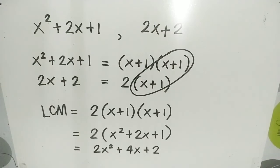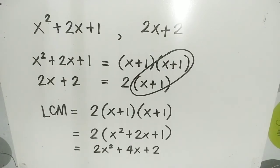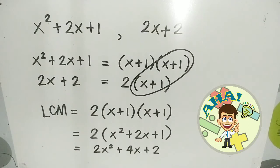So that's how you find the LCM of polynomials. It is very easy — you just need to factor the given polynomials, encircle the common factors, then multiply the common factors and the non-common factors. You can express the LCM in factored form or in expanded form. I hope you learned something from this video. If you like it, click like, put a good comment, and share it. Please don't forget to subscribe and hit the notification bell. Until next time, see ya!